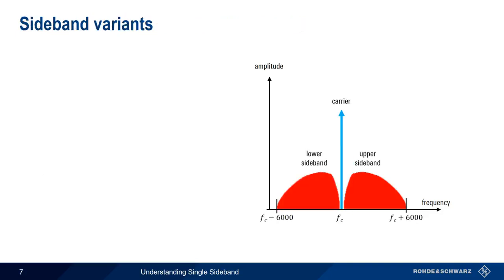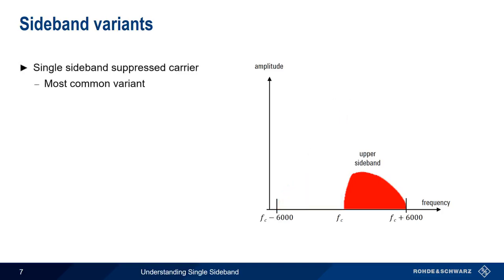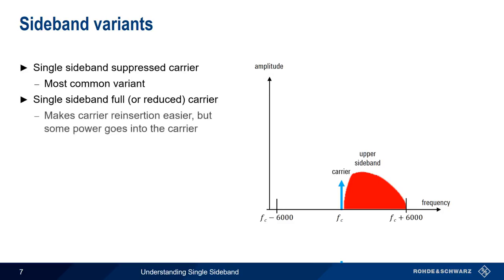There are numerous ways of implementing single sideband. This presentation has been describing single sideband suppressed carrier, which is by far the most common variant. You may also find single sideband full carrier or reduced carrier. In both of these cases, the carrier is not completely suppressed, which makes carrier reinsertion easier at the received side. The disadvantage to these schemes is that some of the transmit power goes into the carrier instead of into the sideband.